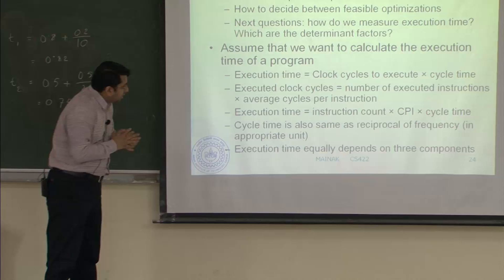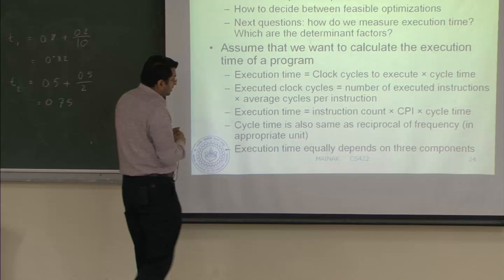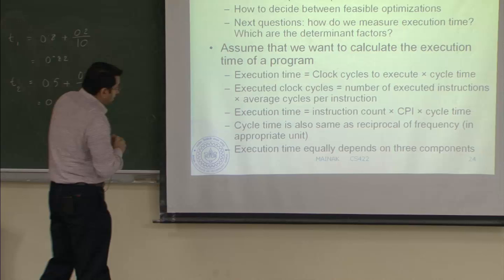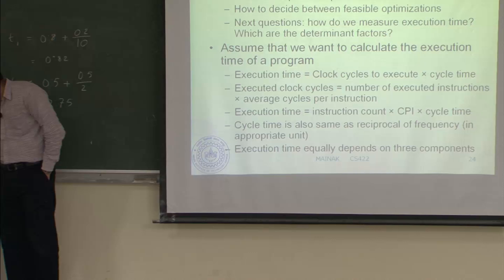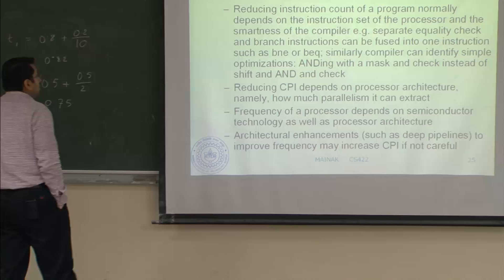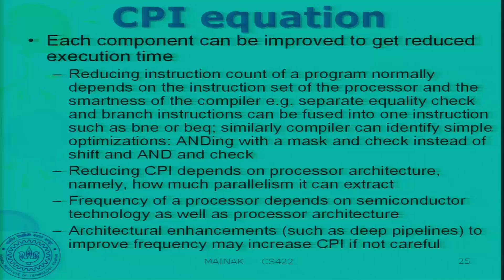Cycle time is also the reciprocal of frequency — for example, if my frequency is 1 GHz, my cycle time is 1 nanosecond. Execution time equally depends on all three components. Each component can be improved to reduce execution time. Reducing instruction count normally depends on the instruction set of the processor and the smartness of the compiler.